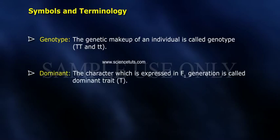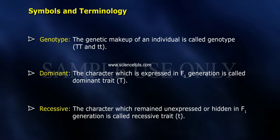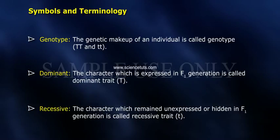Dominant refers to the character which is expressed in the F1 generation and is called the dominant trait, represented by capital T. Recessive refers to the character which remained unexpressed or hidden in the F1 generation and is called the recessive trait, represented by small t.